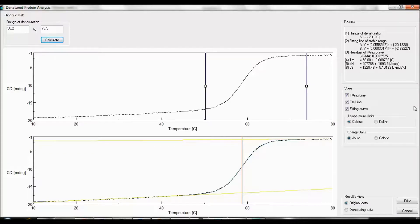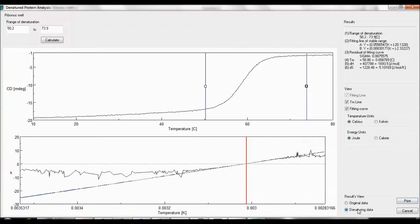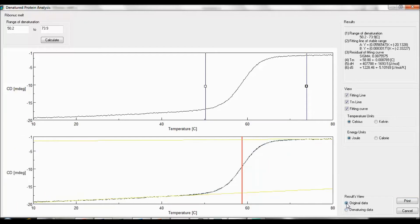You can also choose what units to display your data in for either temperature or energy. Selecting original data plots CD as a function of temperature, while selecting denaturing data shows a Van't Hoff plot where the natural log of the equilibrium constant is plotted as a function of the inverse temperature. You can also choose to print your data by selecting print.